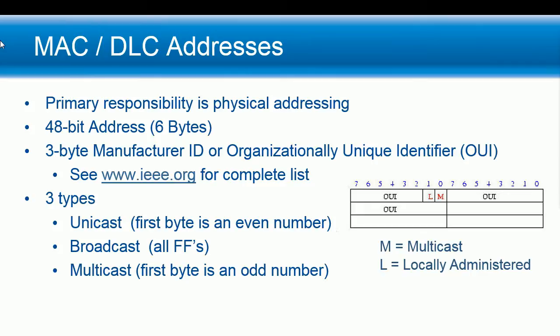For the first six bytes, the destination address, there are three different types of addresses: unicast, which is unique — meaning it's coming from my unique NIC going to your unique NIC; broadcast, sending to all F's destination address, meaning I want everybody on the subnet to receive this particular frame; and then multicast, which is a group address. The difference is the first byte — if it's an even number, zero is an even number, that makes it a unicast or unique address. If all six bytes are FF, that's the broadcast address.